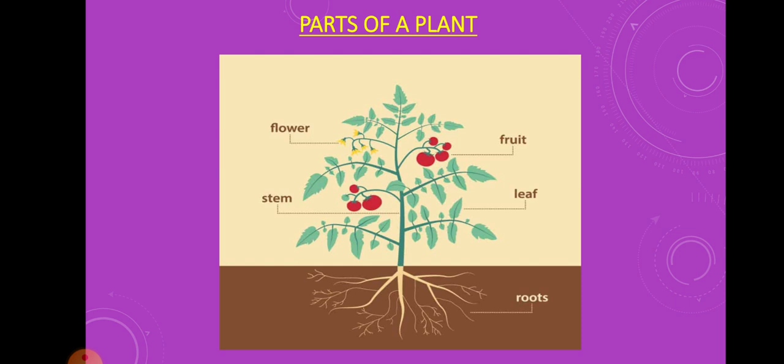And each part has a specific function. Now let us study about the different parts of a plant. Students, plants typically have six basic parts: roots, stems, leaves, flowers, fruits, and stalk.